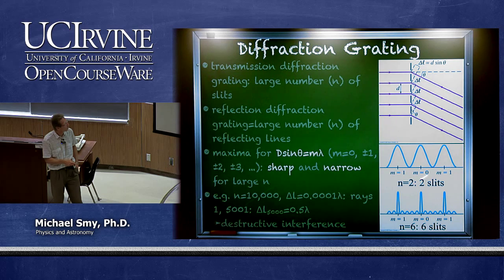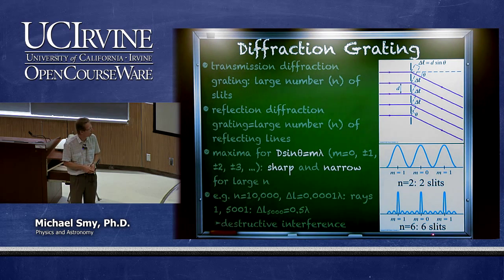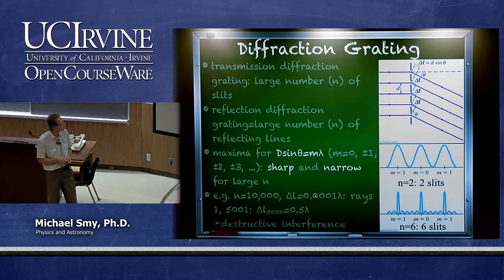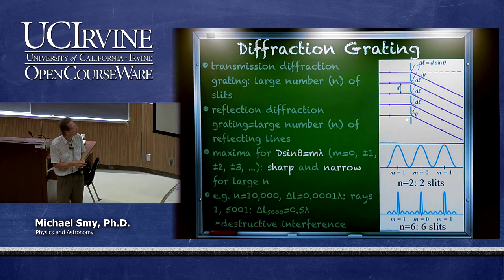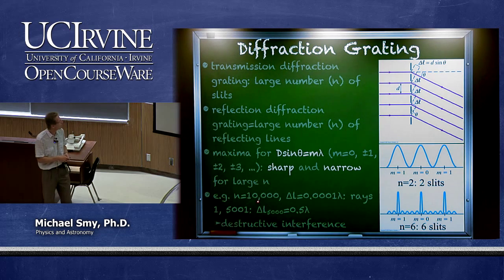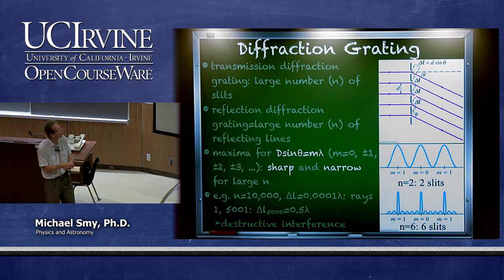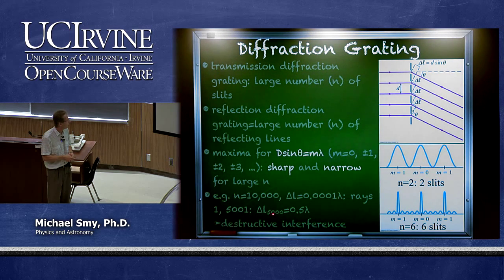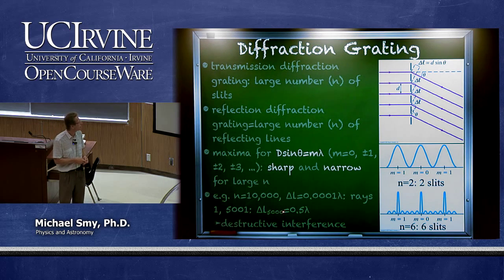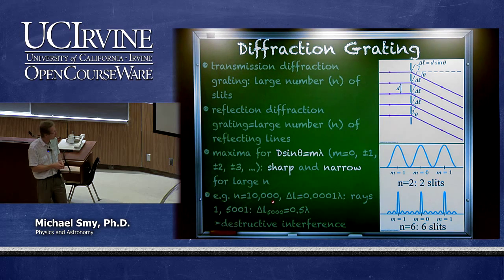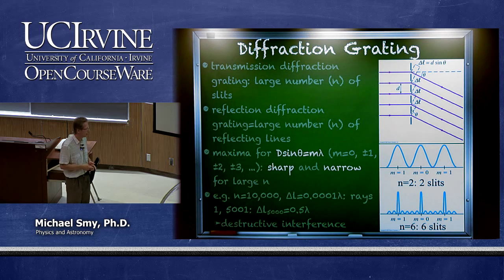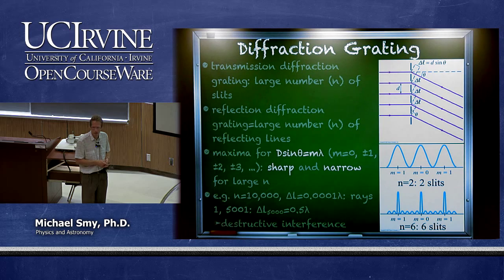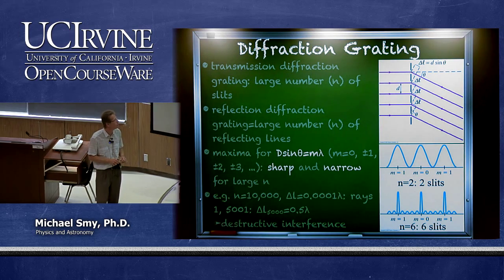The reason for the sharp, narrow maxima with large numbers of slits is that even a slight mismatch — say one-thousandth of a wavelength from one ray to the next — means the five-thousandth-and-first slit will be shifted by half a wavelength relative to the first. This leads to pairwise destructive interference across the whole grating, so you already get a minimum even if you are just one-thousandth of a wavelength off. Therefore diffraction gratings are very precise in measuring the wavelength of a wave.